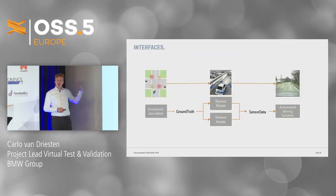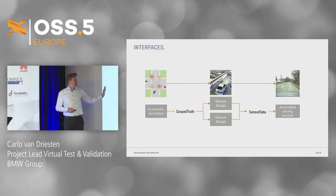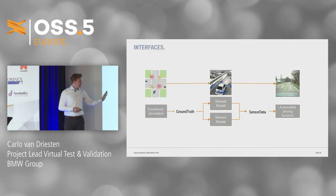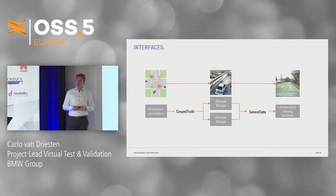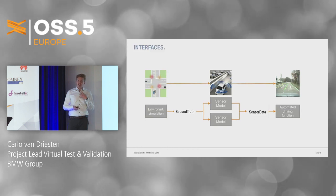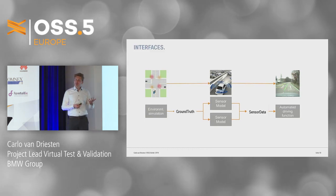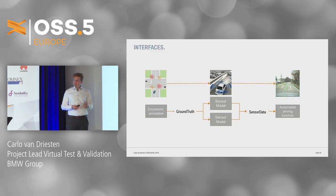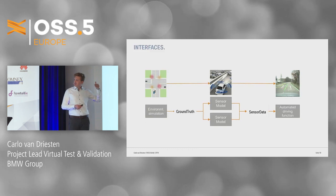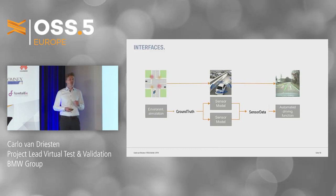If we have the environment on the left and the simulation, we have in the middle these sensor models connected in the end to our perception module. The left side you can call the ground truth — it's objectivity, it's what is real. We have to find a description of the world that is objective and fed into these models, and these models give the subjective view in terms of their sensor data. These are the two interfaces that can be described for sensor modeling.